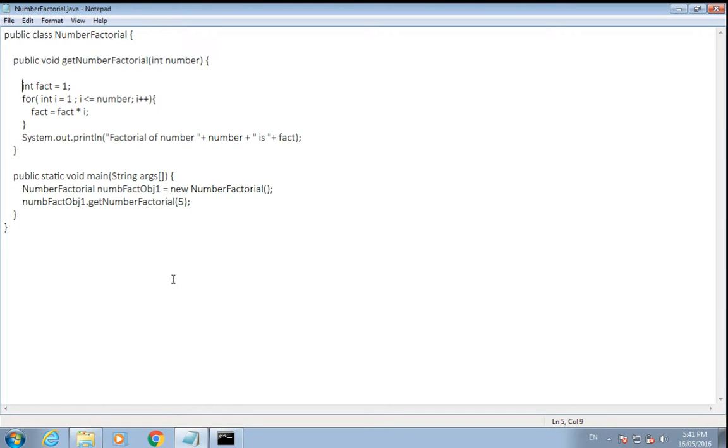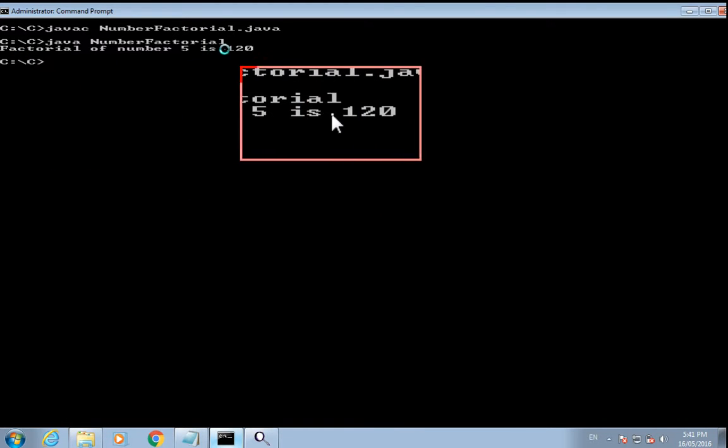So here you can see the same code I just typed here. Let's compile this code and we'll see factorial of 5. Factorial of number 5 is 120.